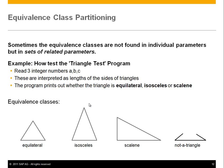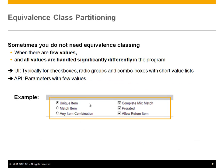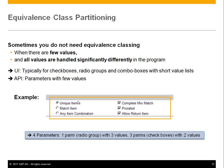Sometimes you do not need equivalence classing at all — it's important not to force this technique all the time. When there are only few values, or all values are handled significantly differently in the program, you would not do equivalence class partitioning. For example, a radio group with three items and three binary on/off switches gives you four parameters: one with three values and three with two values each. In that case you would not do any equivalence classing and just treat them as-is — this applies to both UI and API.